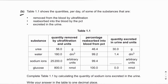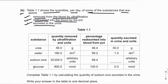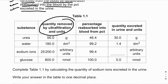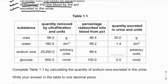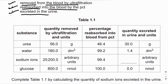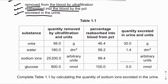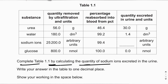Part B: Table 1.1 shows the quantities per day of some substances removed from the blood by ultrafiltration, reabsorbed into the blood by the PCT, and excreted in urine. For example, urea filtered is 56 grams, 46.4% is reabsorbed, and the remaining is excreted. We need to calculate the quantity of sodium ions excreted in the urine, to one decimal place.